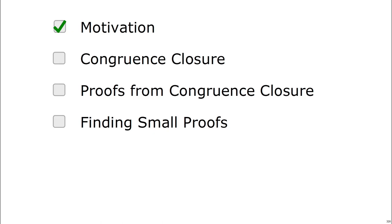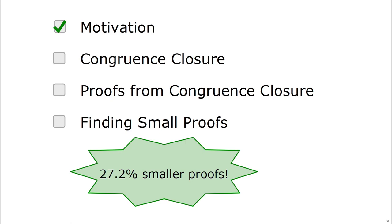So now that we've done a little bit of motivation, I'll go over what congruence closure is and how it works. Then I'll talk about how you get proofs from congruence closure, and finally, finding small proofs from congruence closure, which is our ultimate goal. In the end, I'll show that our algorithm is able to find 27% smaller proofs than the state of the art.